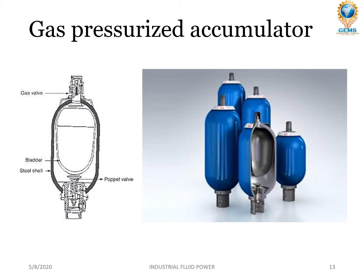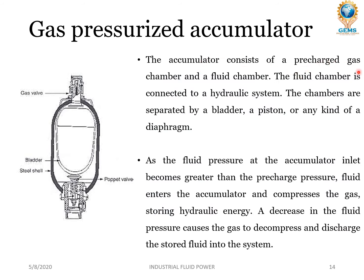Now let's see the gas pressurized accumulator. This accumulator consists of a pre-charged gas chamber and a fluid chamber. The fluid chamber is connected to the hydraulic system. The chambers are separated by a bladder, a piston, or a diaphragm. As the fluid pressure at the accumulator inlet becomes greater than the pre-charged pressure, the fluid enters the accumulator and compresses the gas, storing hydraulic energy.